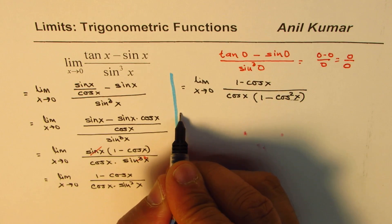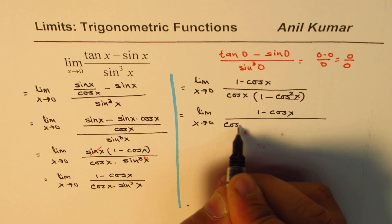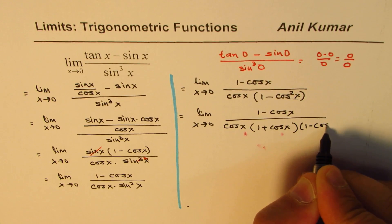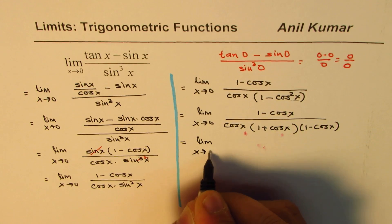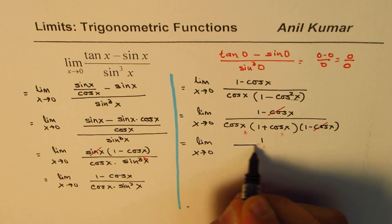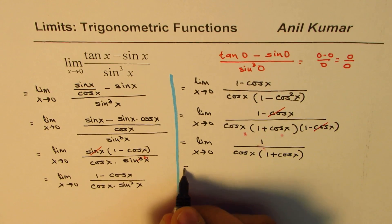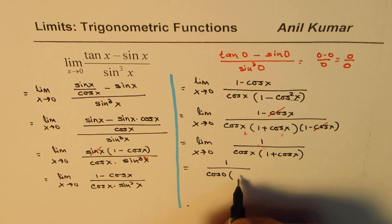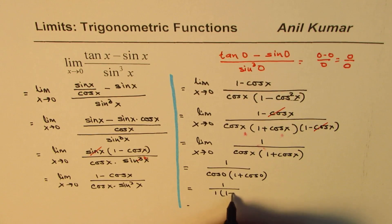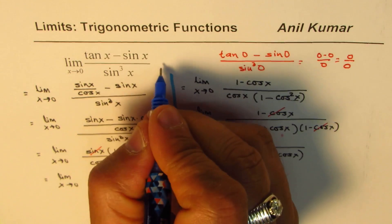Now 1 minus cos square x could be factored. So we have limit x approaches 0, numerator is 1 minus cos x divided by cos x times, using difference of squares, 1 plus cos x times 1 minus cos x. Now 1 minus cos x and 1 minus cos x cancel out, so you have 1 over cos x times 1 plus cos x. Now you can substitute x as 0, so you get 1 over cos 0 times 1 plus cos 0. As you know, cos 0 is 1, so you get 1 over 1 times 1 plus 1, which is 1 over 2. So the limit of this function is half.